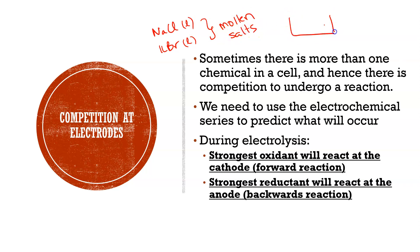In those previous examples we had a single container connected to a power source and the electrolyte was just the molten salt — nothing else present in the cell. Sometimes a cell contains more than one thing, such as multiple salts or an aqueous solution. This means we need to use our electrochemical series to predict what will occur.